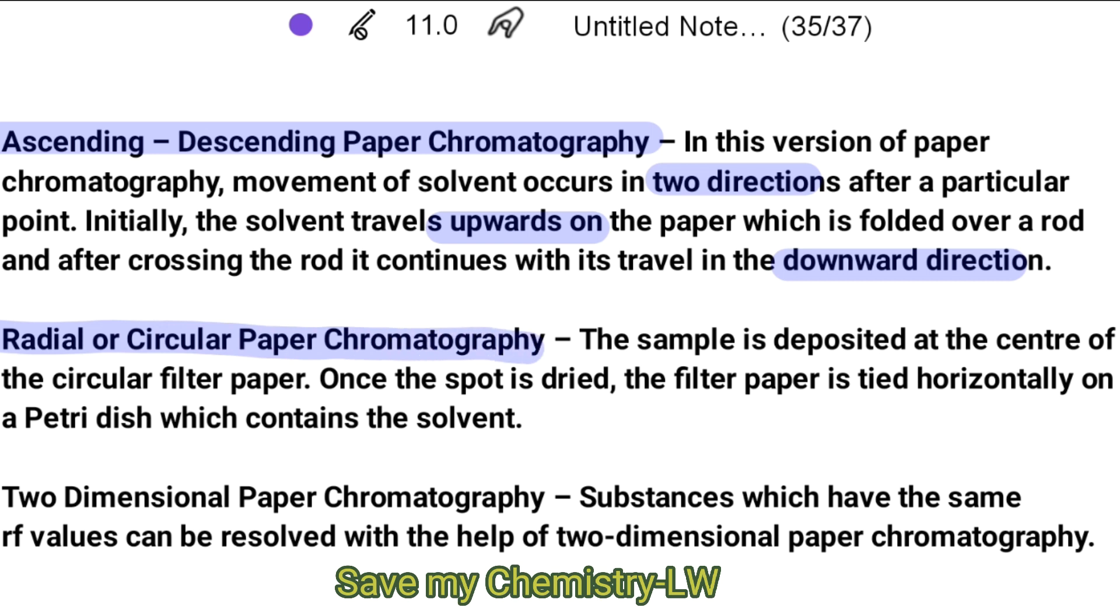Radial or circular paper chromatography. The sample is deposited at the center of the circular filter paper. Once the spot is dried, the filter paper is tied horizontally on a Petri dish which contains the solvent.